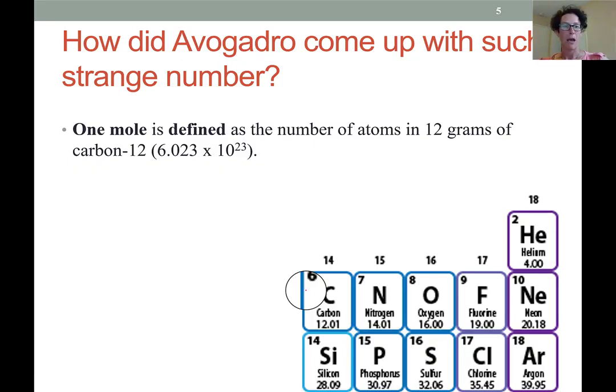He knows that carbon-12 is composed of atoms with 6 protons and 6 neutrons. It has an atomic mass number of 12. So he said, if I have 12 grams of that, how many atoms are in there, and it turns out that it is 6.022 times 10 to the 23. Sorry about my typo.